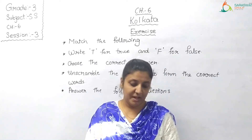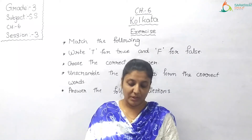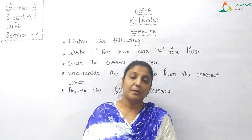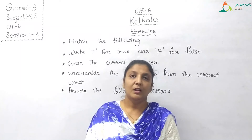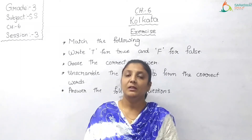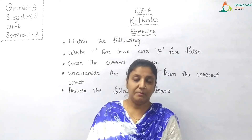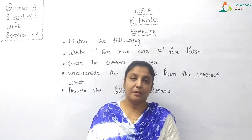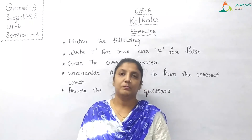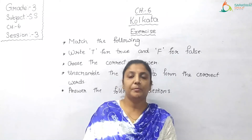Next, Column A, option E: Sandesh — match it with Column B, option number 2: A Bengali sweet. So match E with 2. We have finished match the following. Let us check: A with 3, B with 4, C with 1, D with 5, and E with 2.